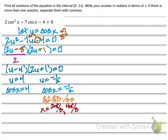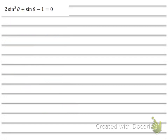So: make your substitution, set it equal to 0, factor, and get as far as you can — it's just fewer pen strokes to write u than to write cosine. Then sub your cosine back in and go to the unit circle. For the next problem, 2sin²θ plus sinθ minus 1 — we're going to do the same thing and let u be sine theta. So I can rewrite this as 2u² plus u minus 1 equals 0.